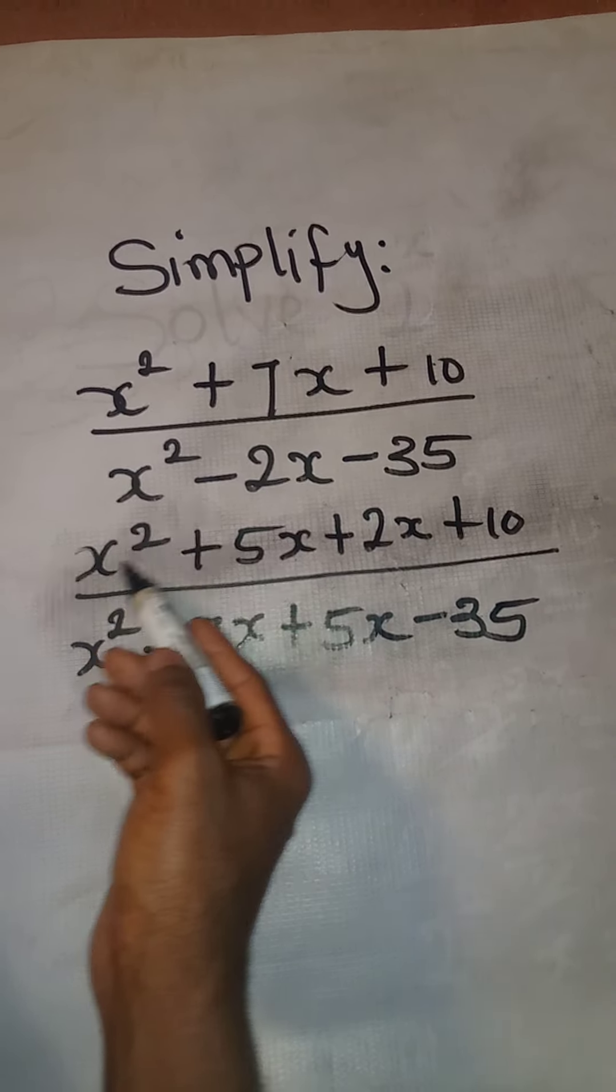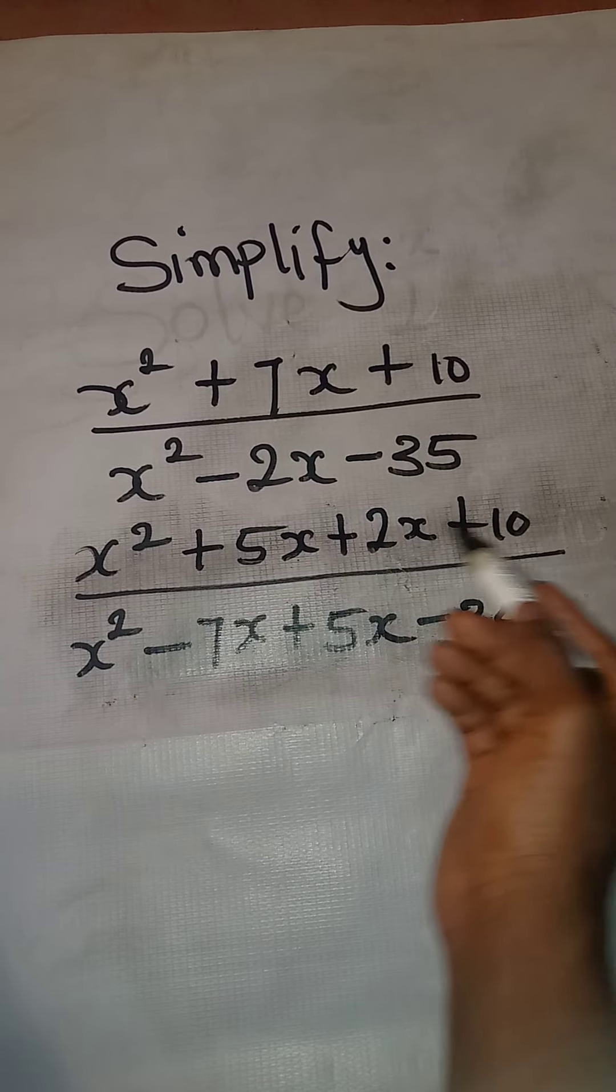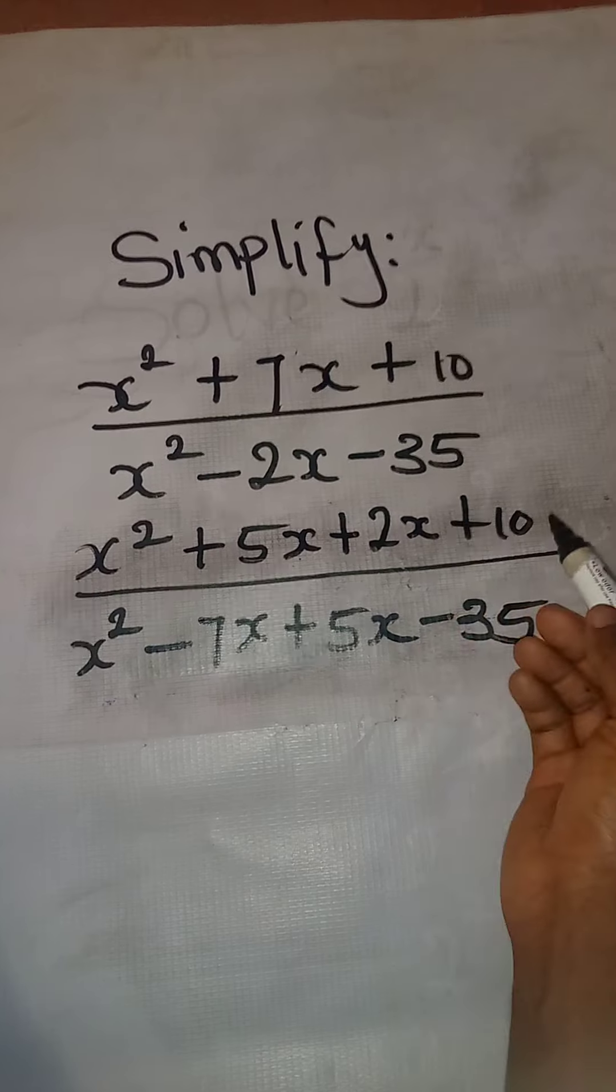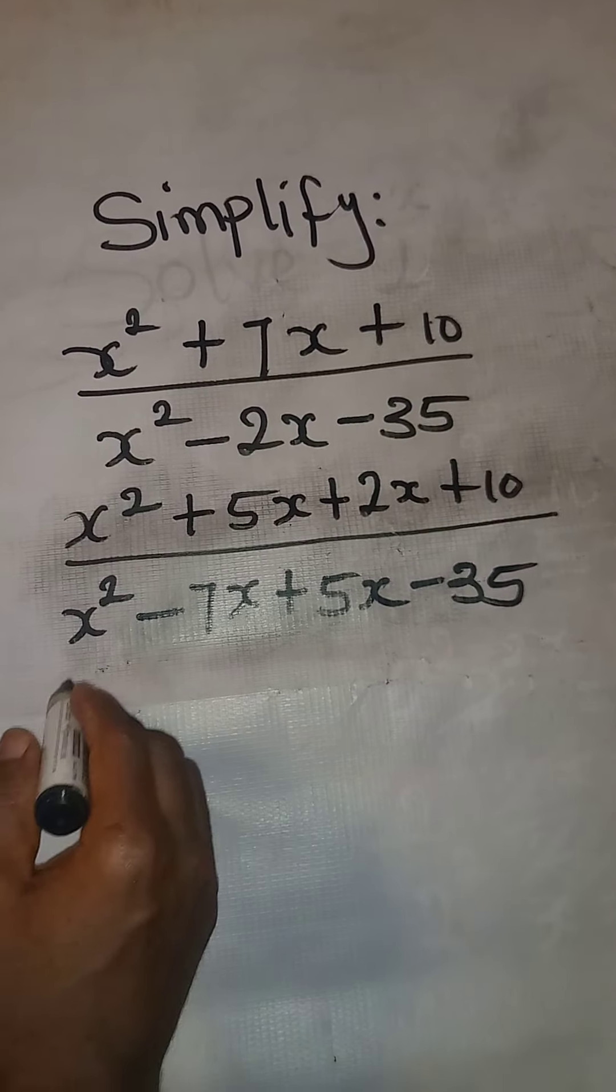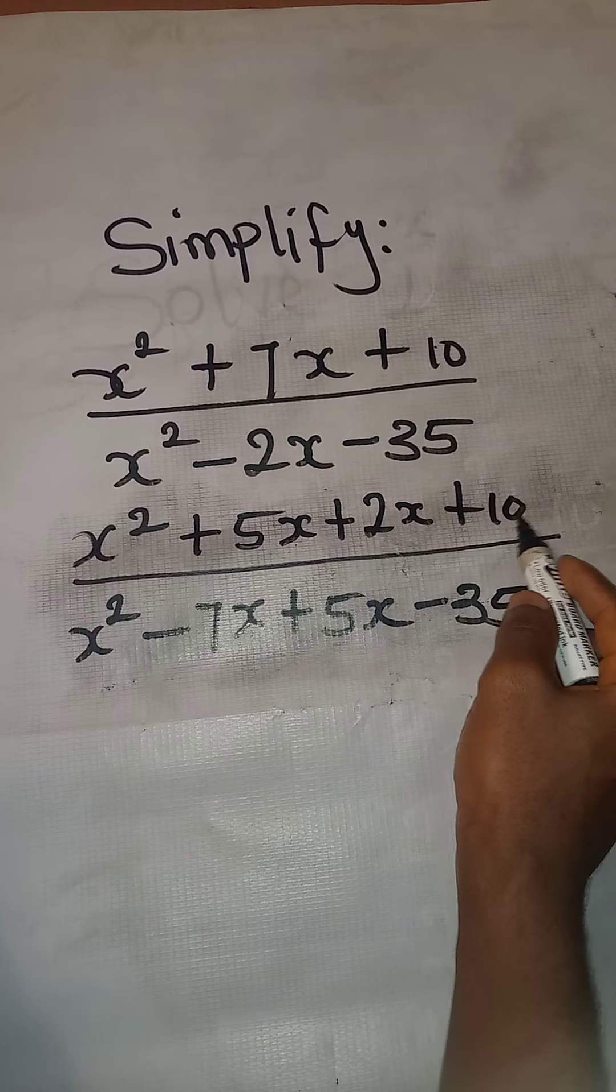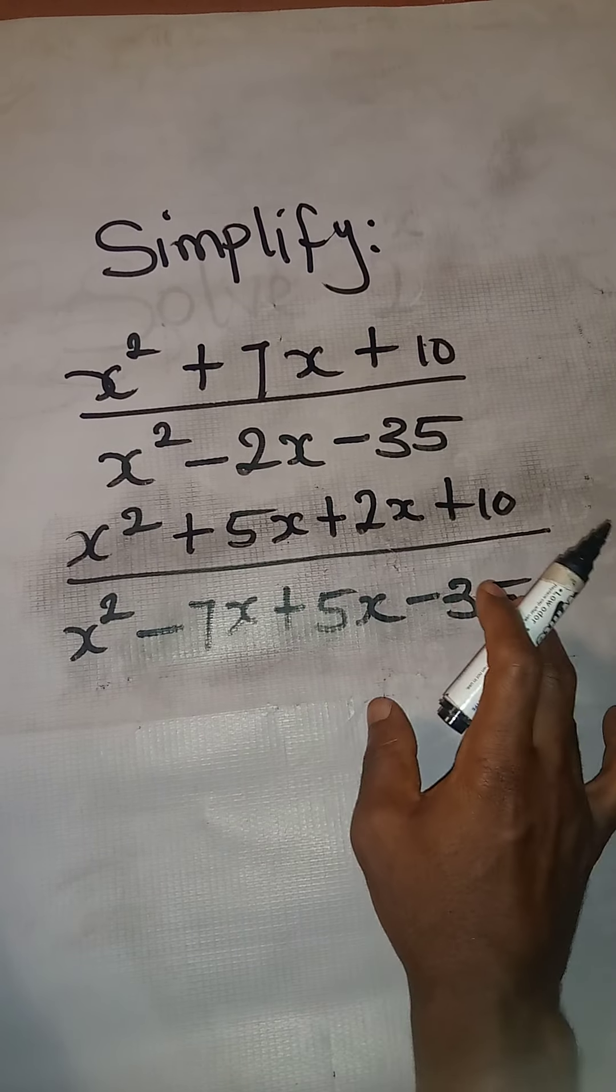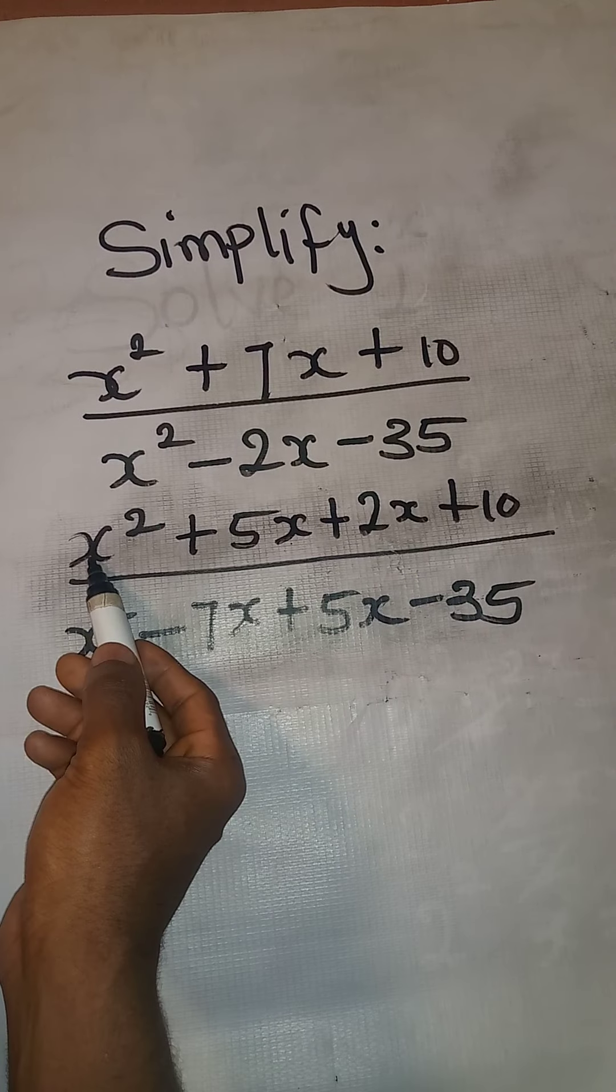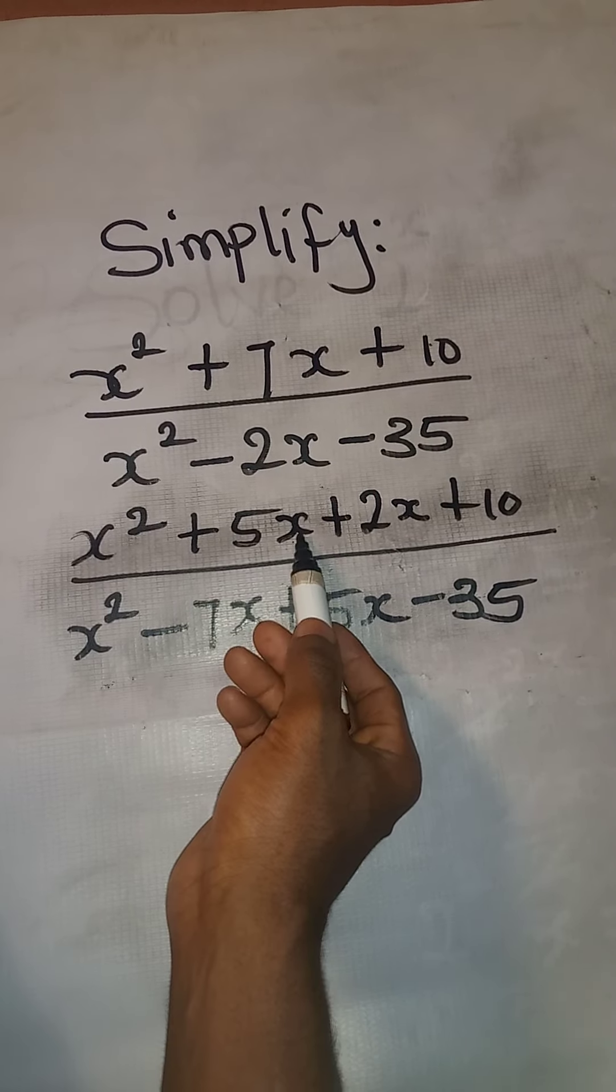The next thing is to group it and then you factorize. Group factorization. We're going to consider these two and consider these two. We'll do the same thing for the denominator. x is here and x is here. So I'm going to bring out x.